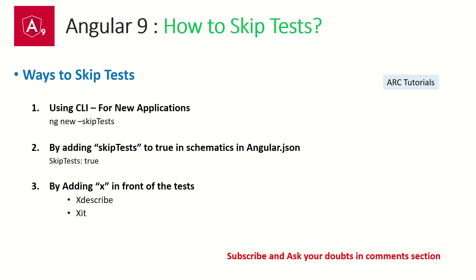Let's see that in detail. Using Angular CLI, we can use the option --skip-tests for a new application. For existing ones, you can add in the schematics skipTest equal to true, and then it will not generate the test cases. Finally, if there is a test case which is failing and you want to skip it, you can write X in front of it and it would skip it.